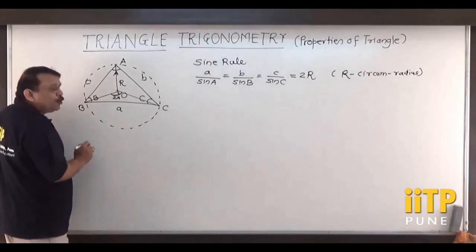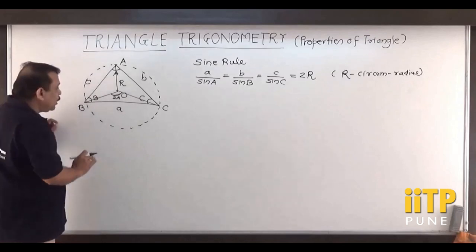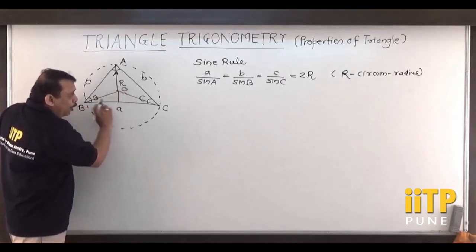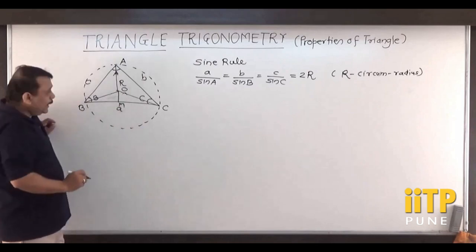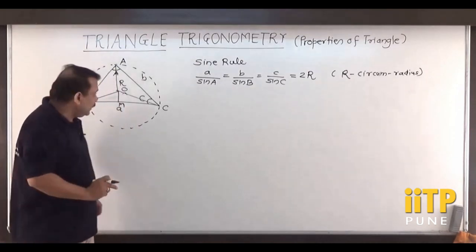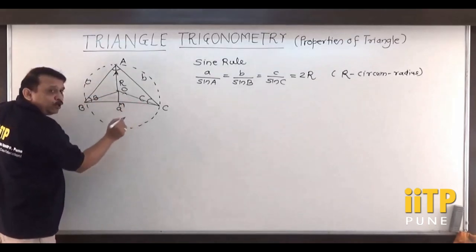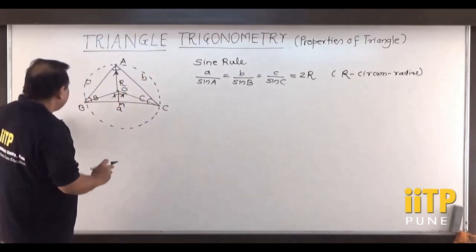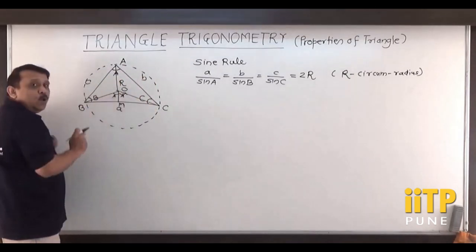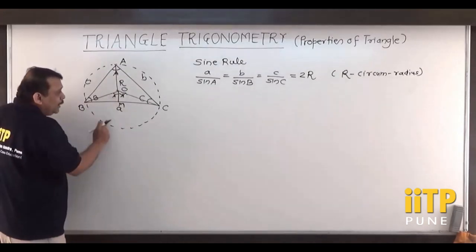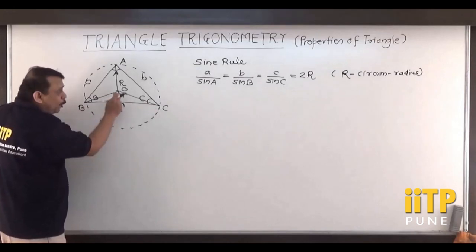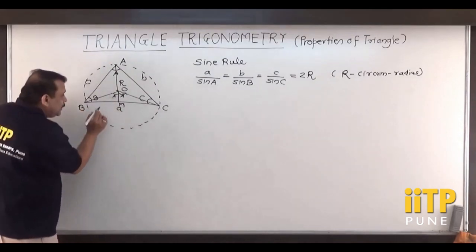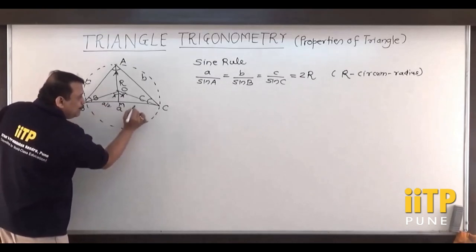Let us drop the perpendicular from center O on chord BC at point M. The angle BOC is 2A, so each half becomes A. The two triangles formed are clearly congruent. Since M is the midpoint of BC — as the perpendicular from the center bisects the chord — and the total distance BC is a, the distance BM becomes a/2.